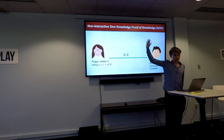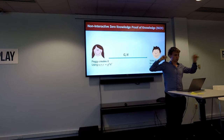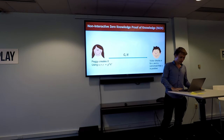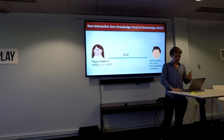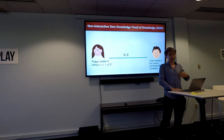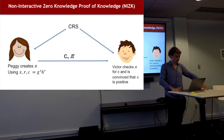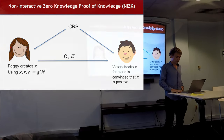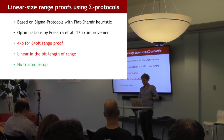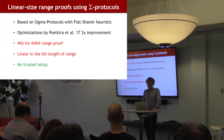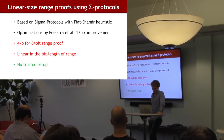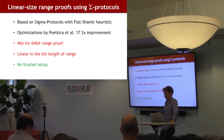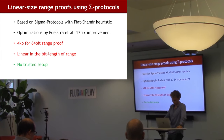It turns out we can make this whole thing non-interactive. This was an interactive protocol between prover and verifier, but we can make it a non-interactive proof where Peggy just writes down the proof and the verifier checks it and is convinced the value is positive. The nice thing is the proof works for everyone — I can attach it to a transaction and everybody can verify it. There's a so-called common reference string which both parties have access to.